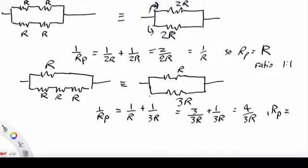So Rp, because we always have to remember that is 1 over Rp, Rp is 3 quarters of R.